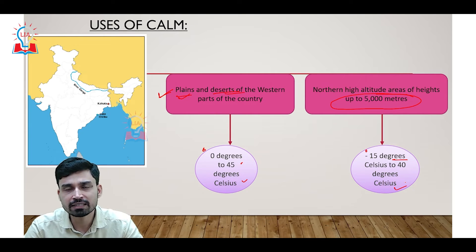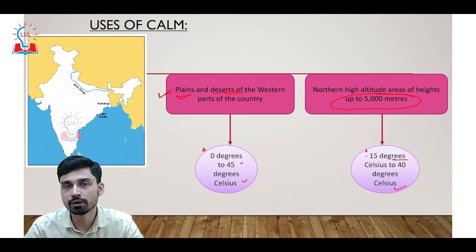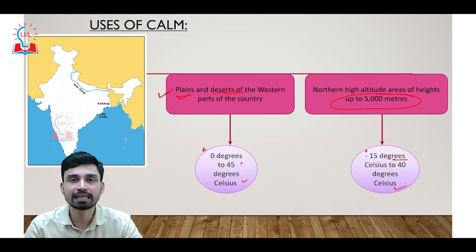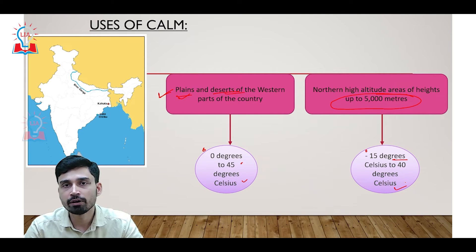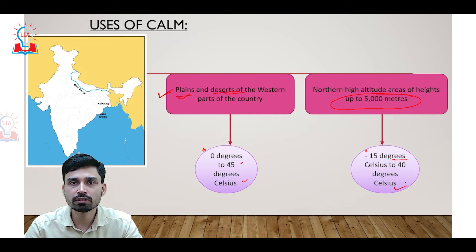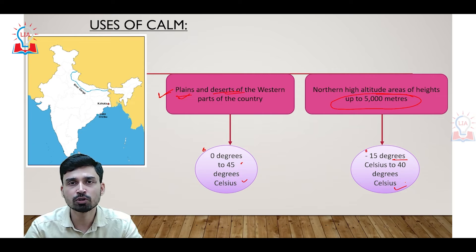From this we can understand that once the CAM system is inducted into the Indian military, it can increase military capability across a wide temperature variation — from the desert regions of western India to the glaciated cold regions of northern India.